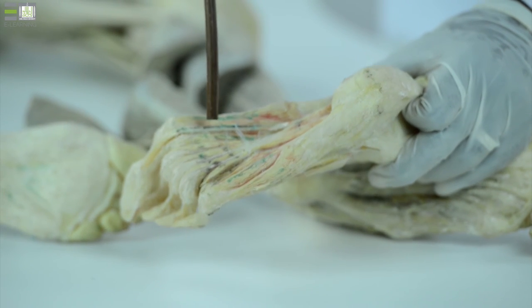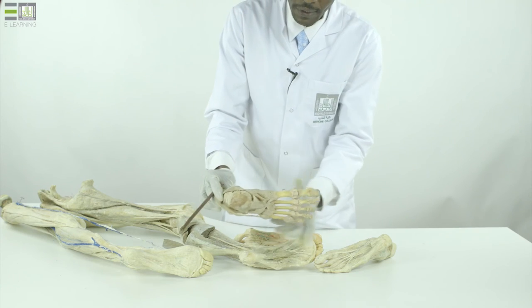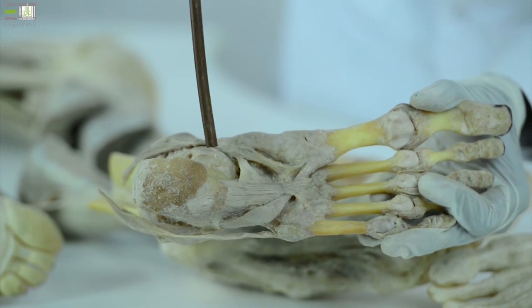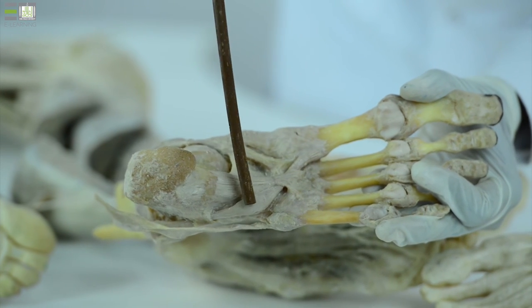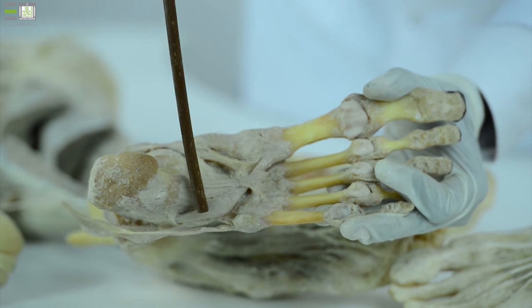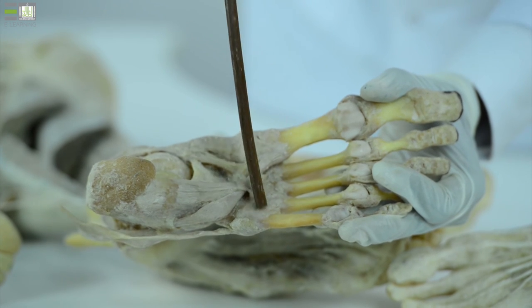And the fourth layer contains two tendons, one from the lateral side of the leg, which is this one, tendon of fibularis longus, which crosses the foot from the medial to the lateral, supporting the transverse arch of the foot.